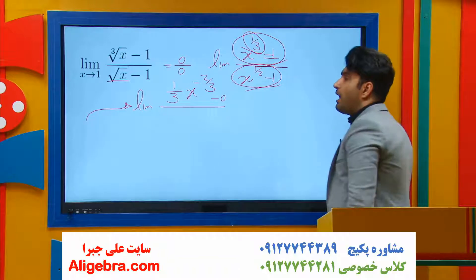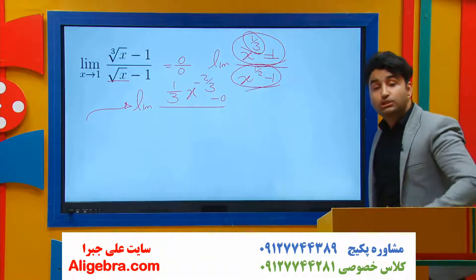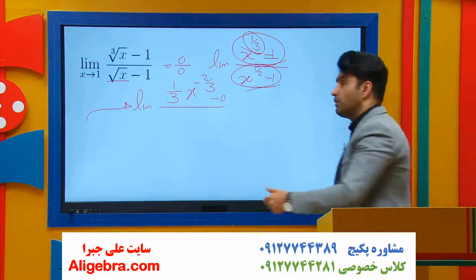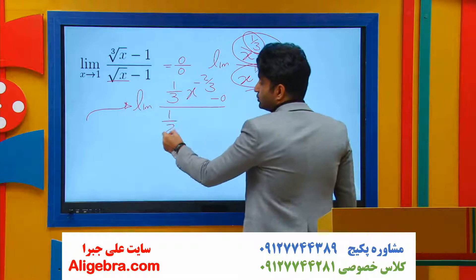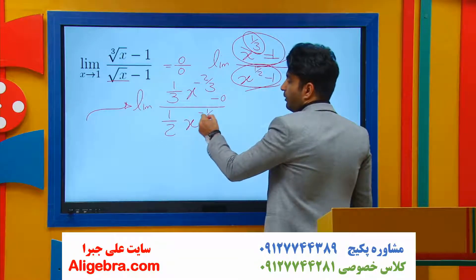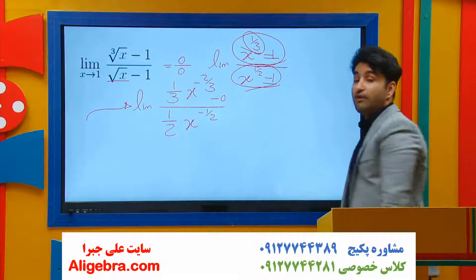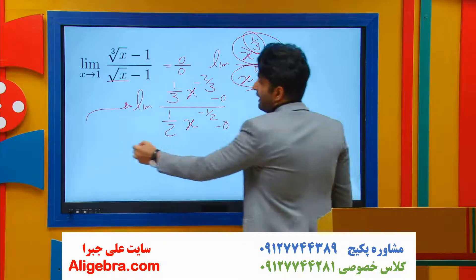On the bottom, the derivative of x to the 1 over 2 is 1 over 2, x to the minus 1 over 2. And the derivative of minus 1 is 0.